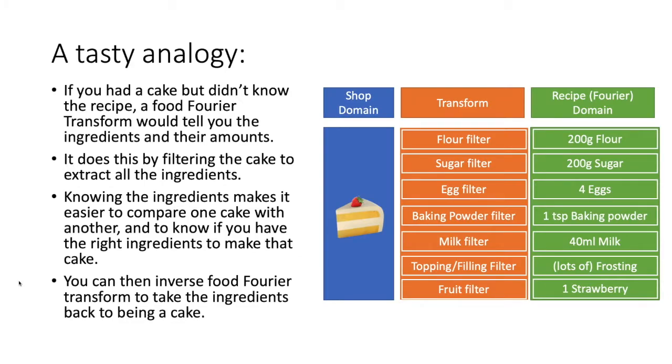So to take what I just said and give a tasty analogy, imagine you had a cake and you wanted to know what was in there, what it was made out of, but you didn't have a recipe or an ingredients list. If we had a hypothetical food Fourier transform, we could take our cake and run it through a series of filters which the transform is effectively doing to extract all the ingredients that make up that cake and the amounts of them, and that would then give us a recipe in the Fourier domain.